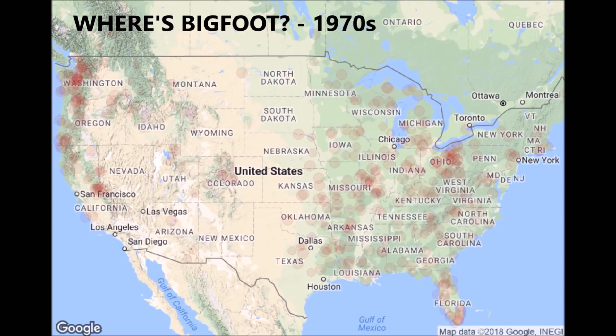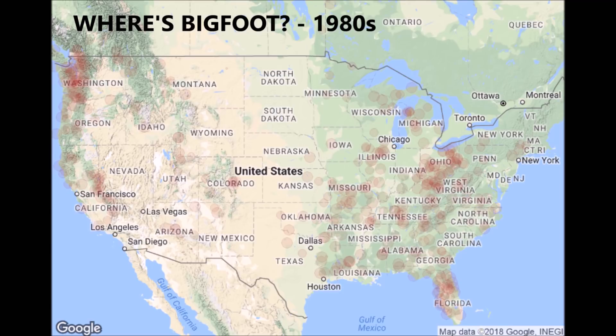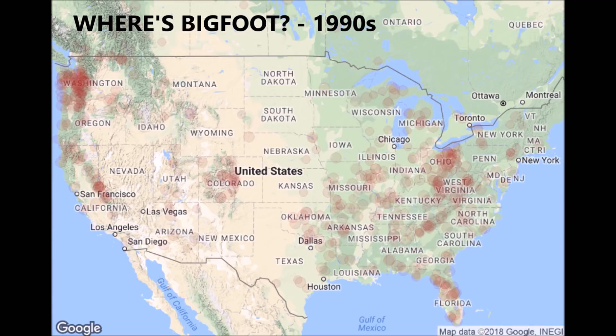I need to explain what the dot size means. Bigfoot sightings are categorised as A, B, or C. The biggest dots are always category A, and smaller dots are Bs and Cs. For most years, the small dots are Bs.